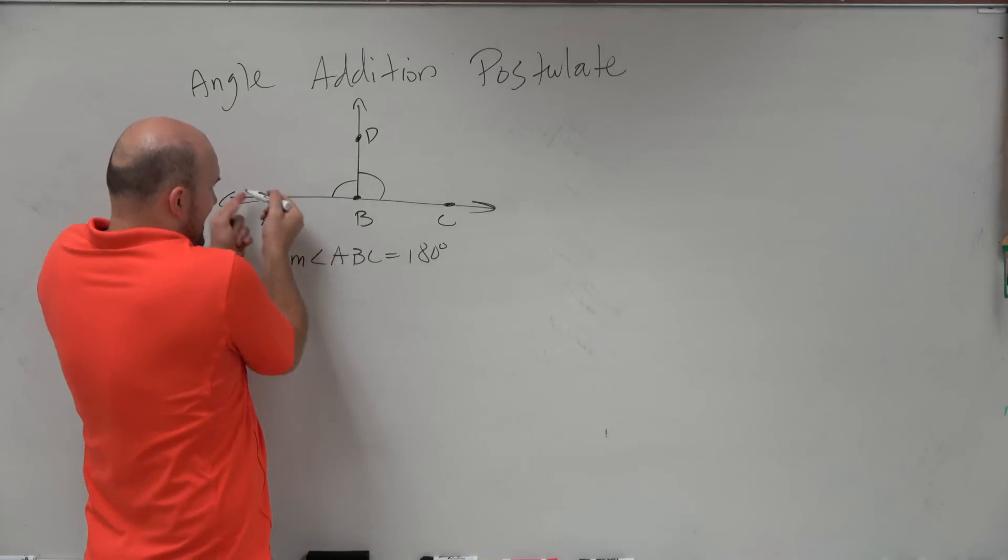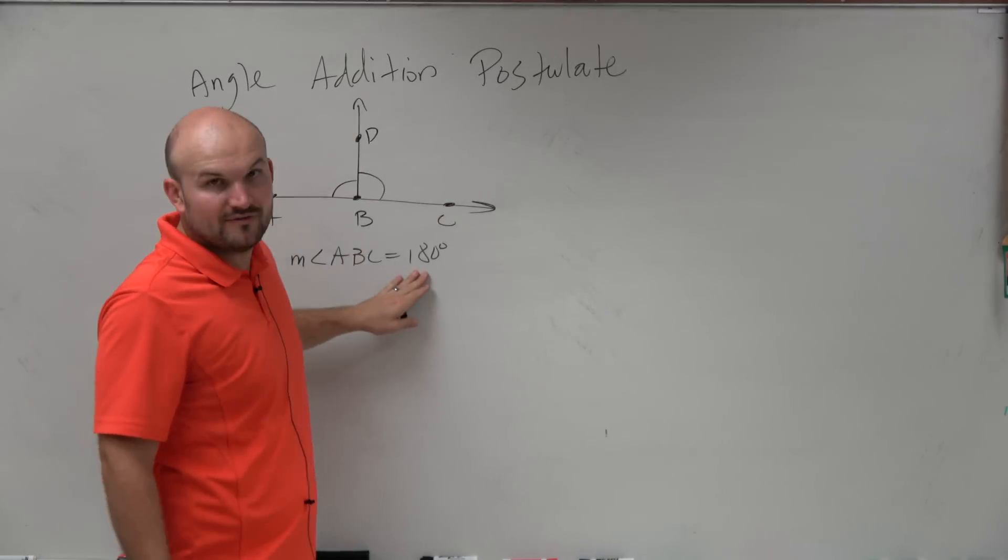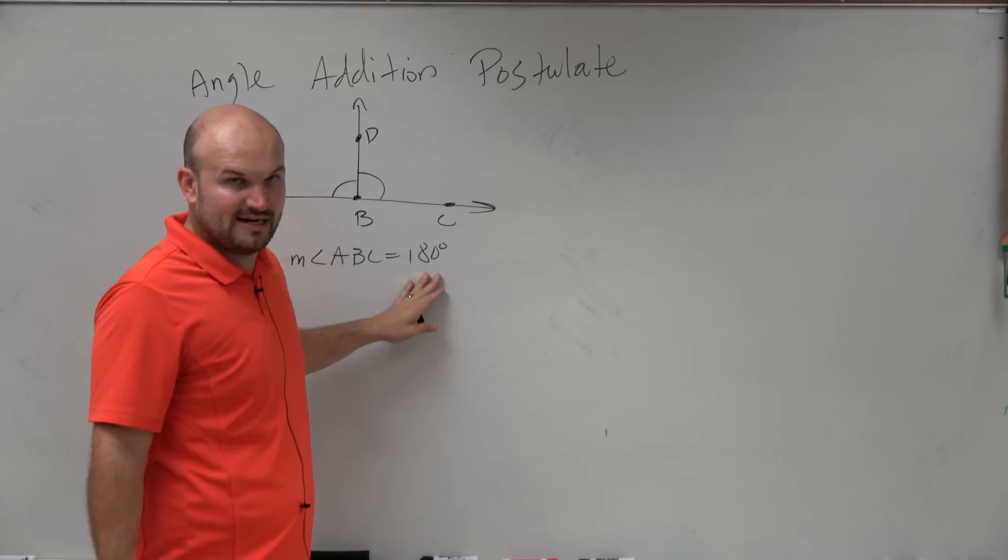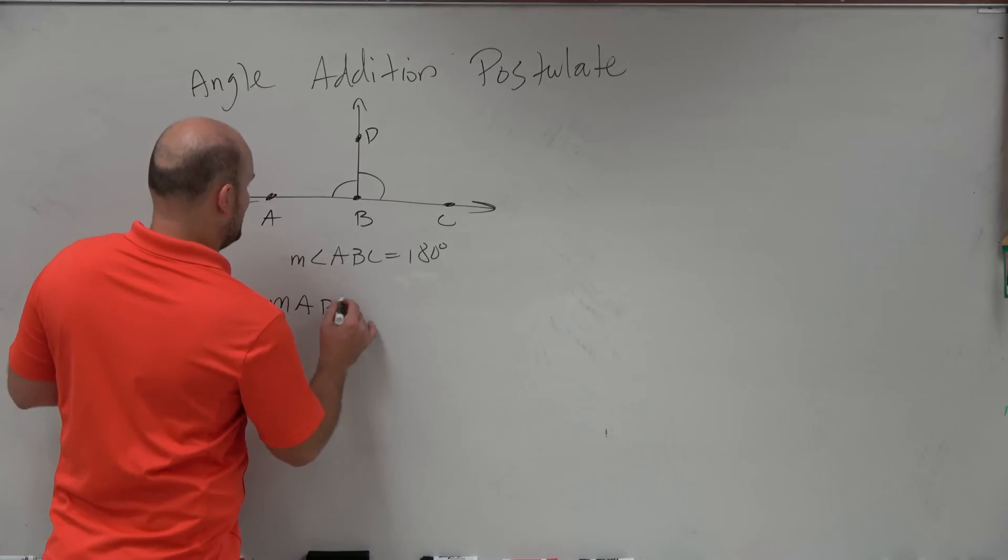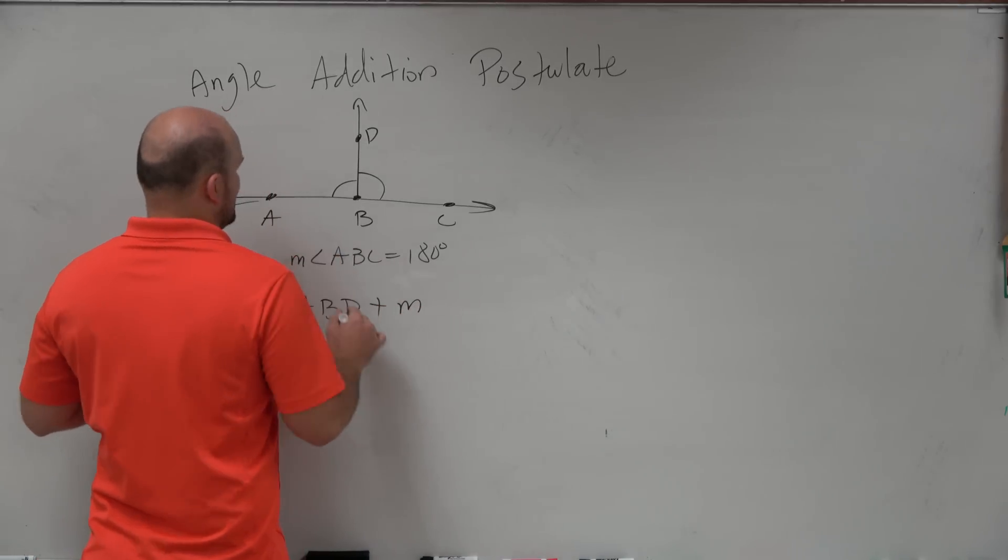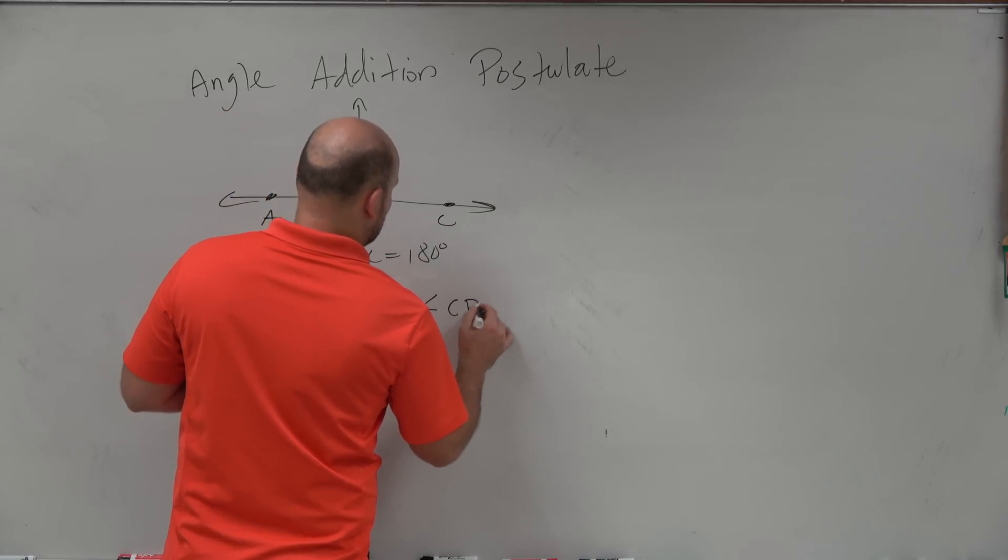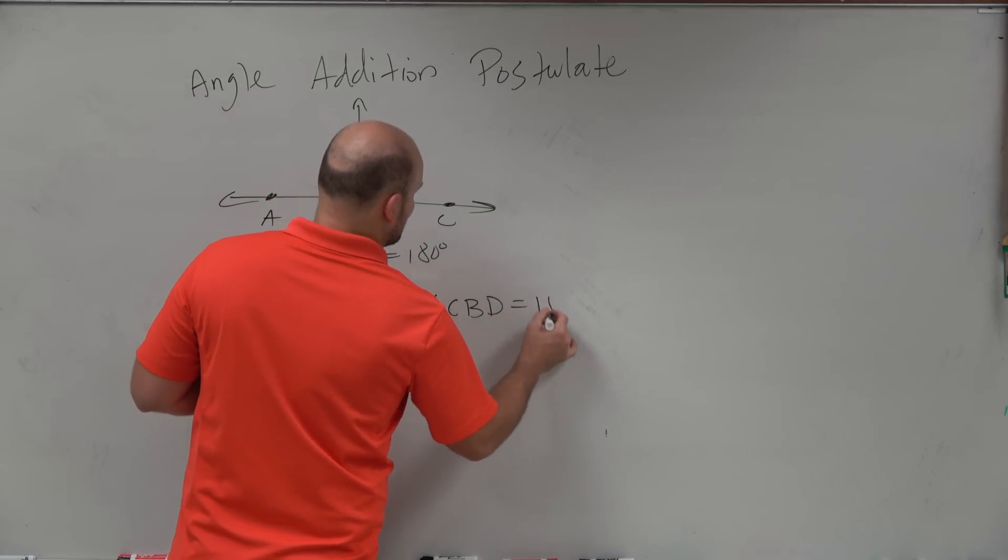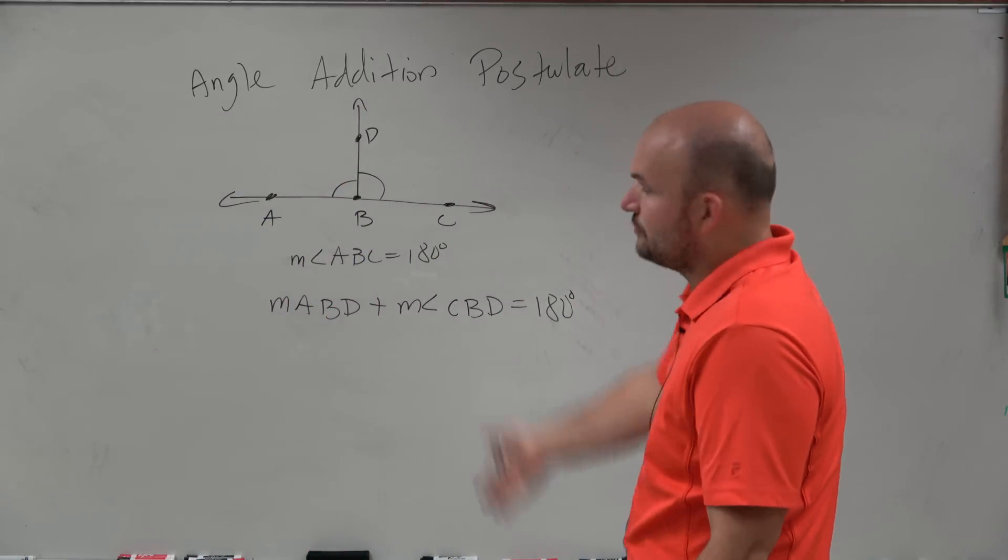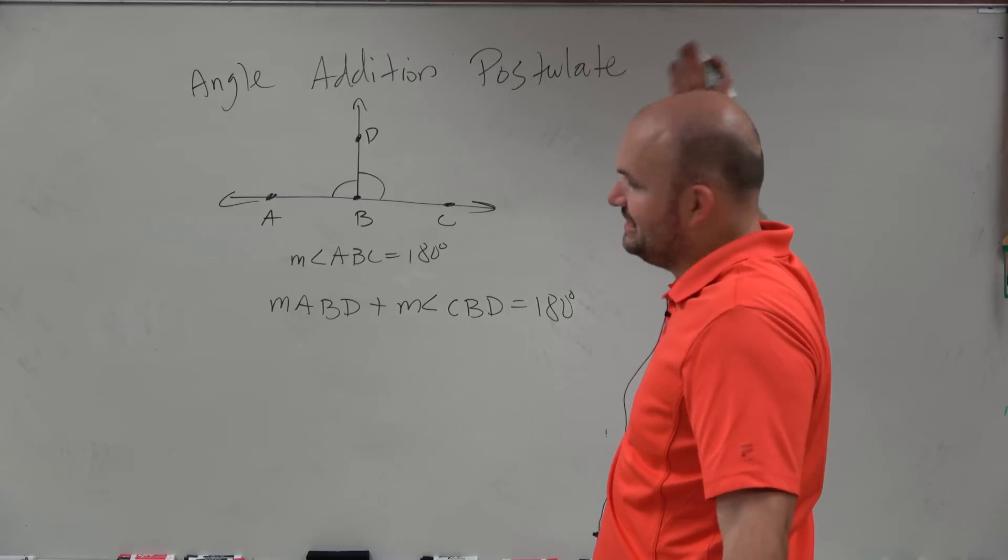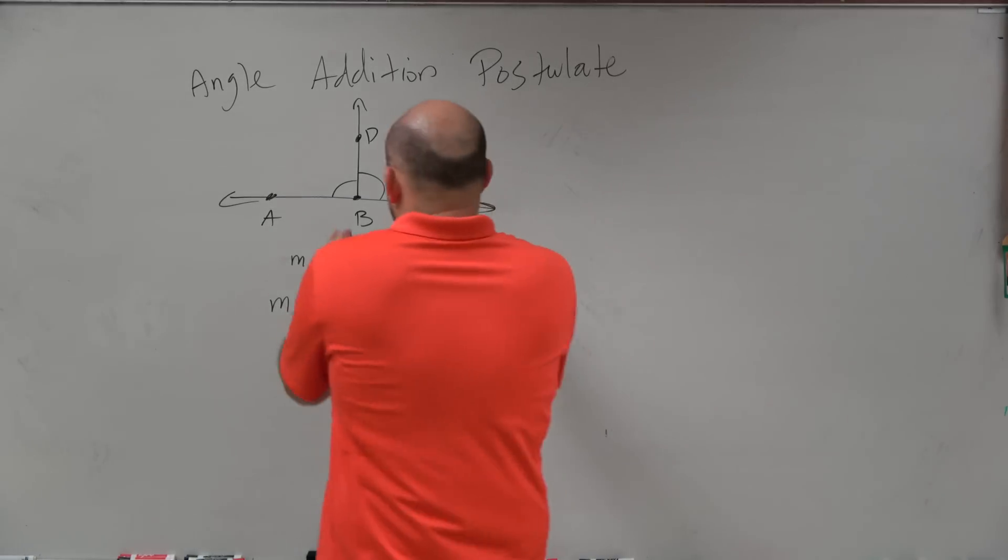It doesn't matter, right? Because ABC did not change. Just because I threw an angle in there didn't change what the sum of ABC is. It's still 180 degrees. So what that means is that the measure of ABD plus the measure of angle CBD is always going to equal 180 degrees. All I did was throw in that angle D, or throw in that line, that ray BD, and I just cut it up. I just broke it up. So we know that's 180 degrees.